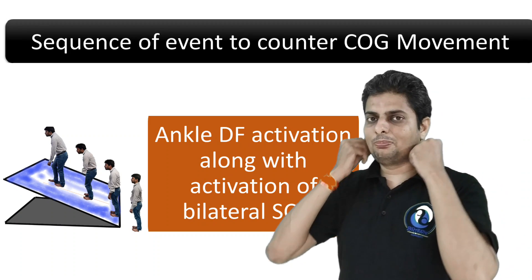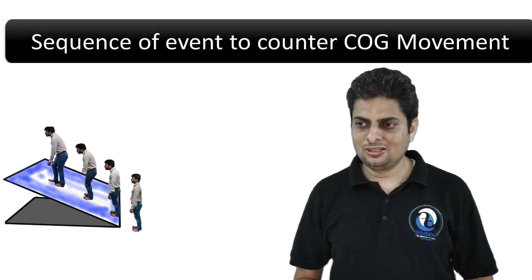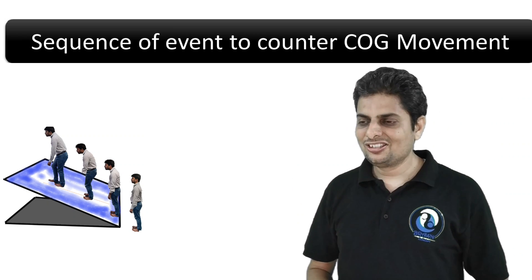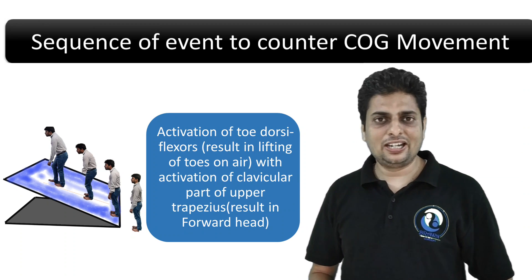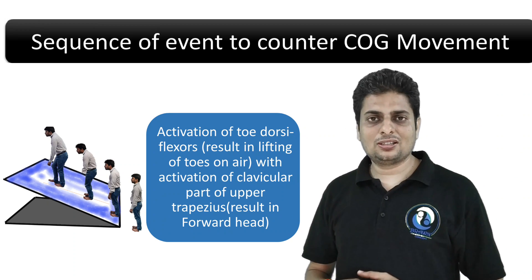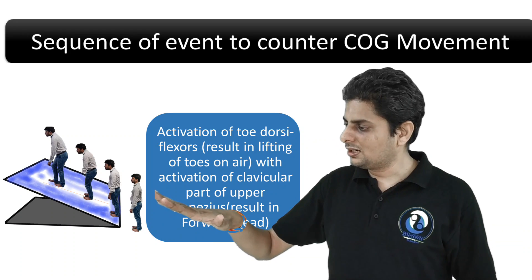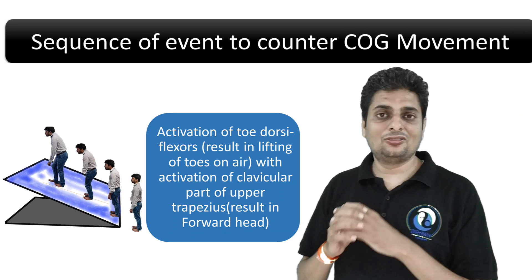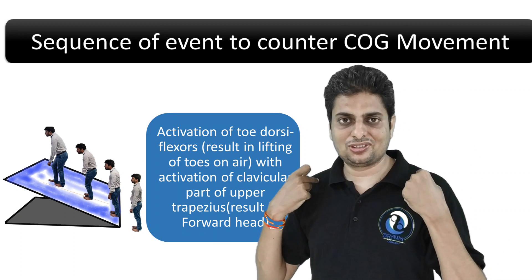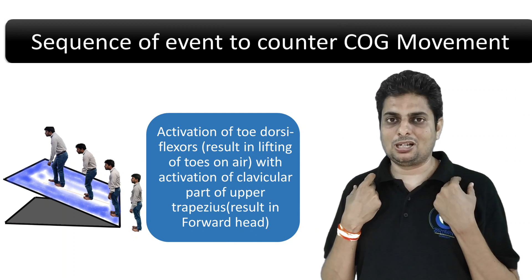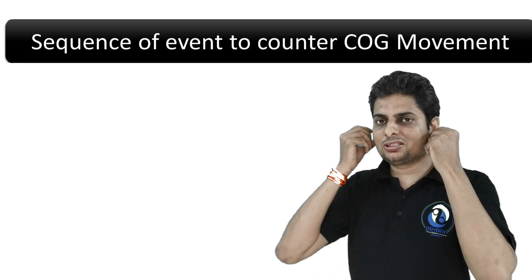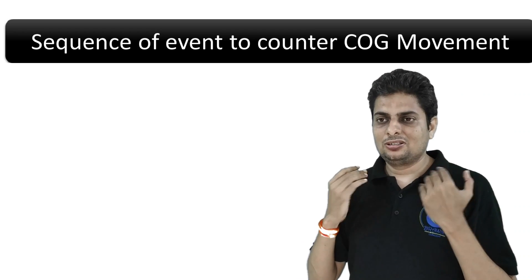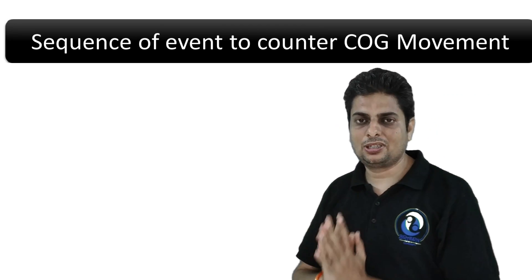If we increase the inclination further, the next step is toe dorsiflexion. At this stage, humans can feel their toes leaving the ground. This is accompanied by activation of the trapezius, especially the clavicular part. So in the first step there was activation of sternocleidomastoid, and in the second step activation of trapezius — this progressively increases forward head translation.